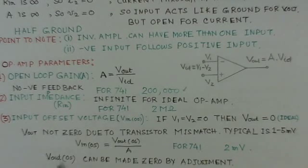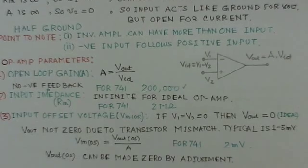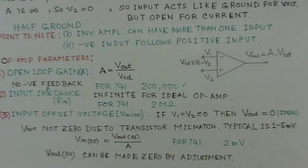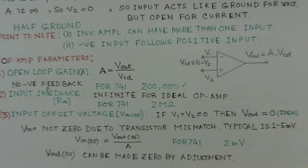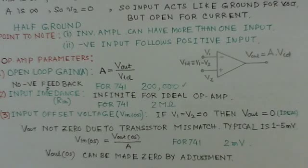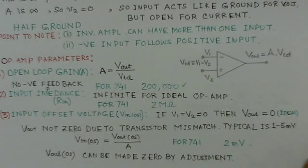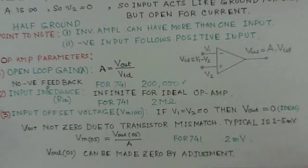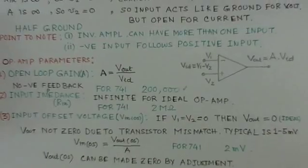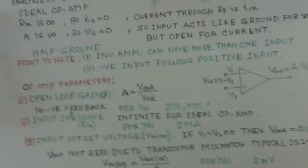The output offset voltage can be made zero by applying a potentiometer between terminals 1 and 5 of the operational amplifier and adjusting the pot until the output voltage becomes zero.